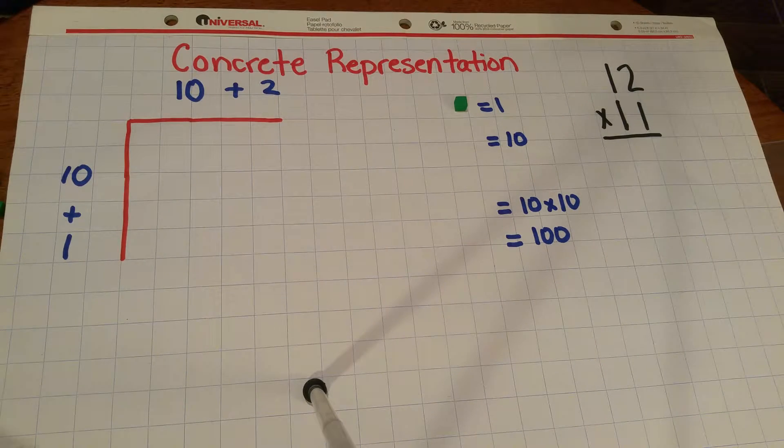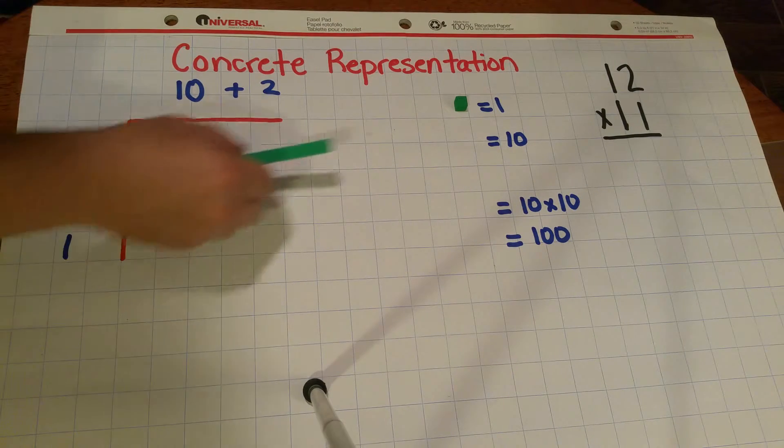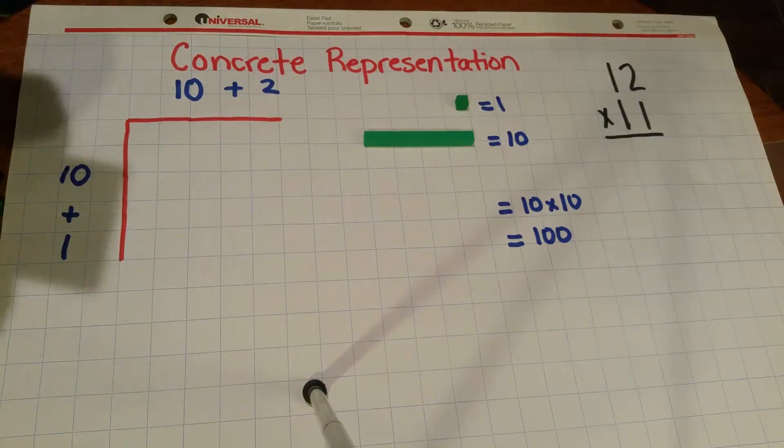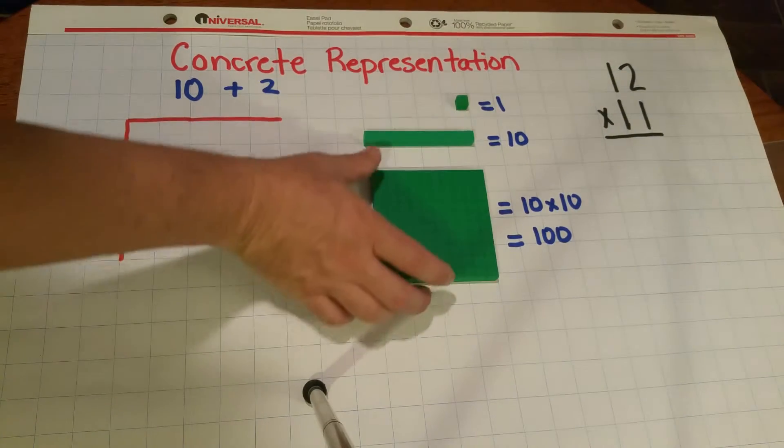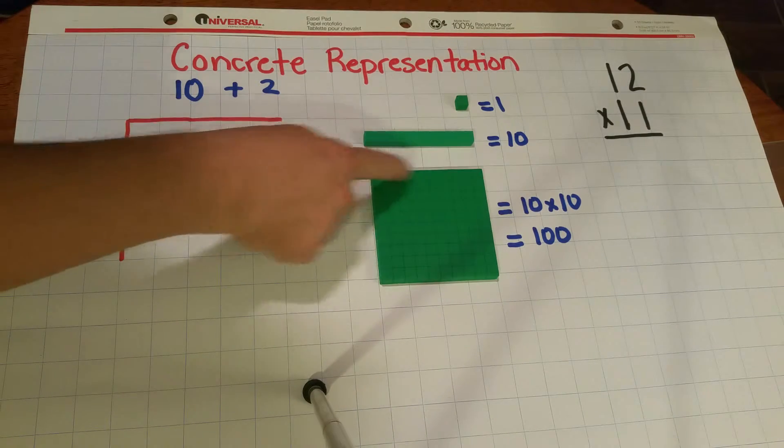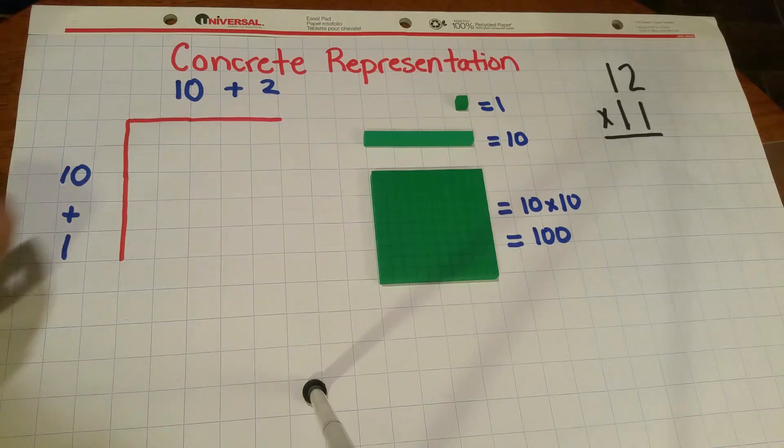So I'm going to define a unit part which is the block that's value is 1, there's a block that's value is 10, and then it's important to also define the block whose value is an array of 10 by 10 which equals 100.